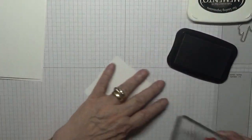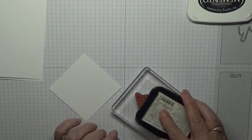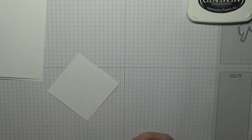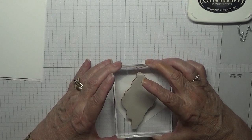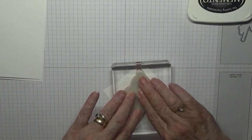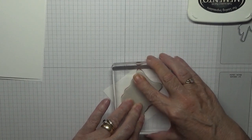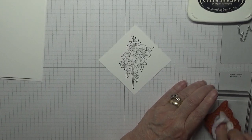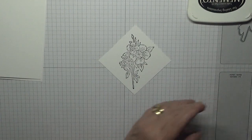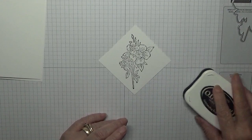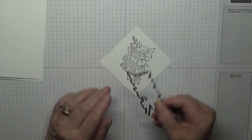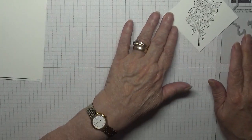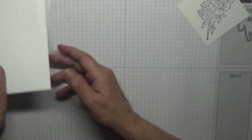This is the largest bit of white scrap I had so I've got to be a bit frugal here. We'll color that in and we're going to use the die to cut it out once we've colored it in. So we'll just set that aside for now.